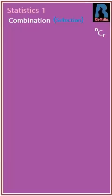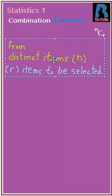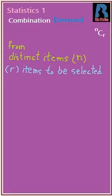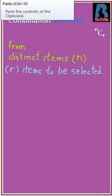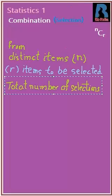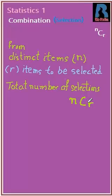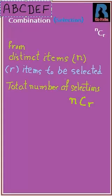In statistics, we have the topic of combinations, which also means selection. In maths we call it NCR, which means that if we have N distinct objects and from these objects we are to take R items, then the total number of combinations or total number of selections will be equal to NCR, or N combination R.